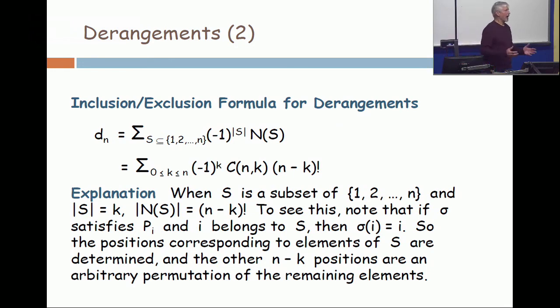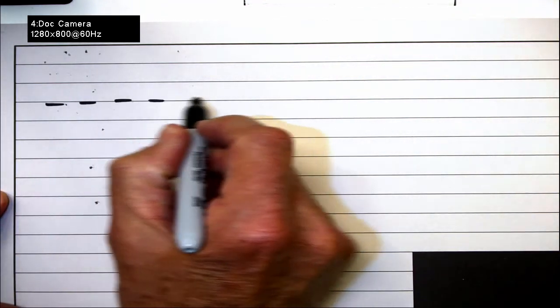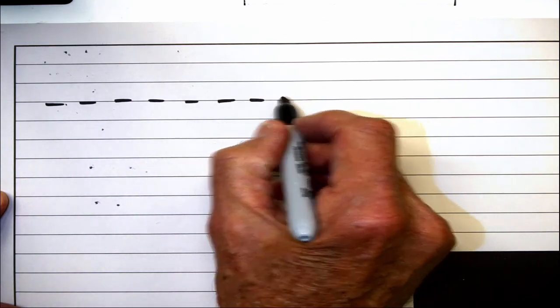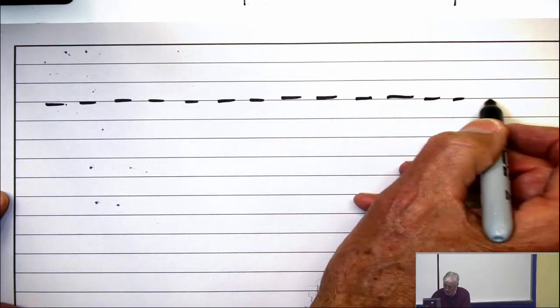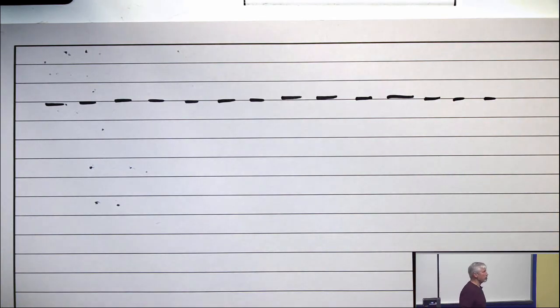Alright, look at a set of size k. So k elements of the set S are specified. Now, when you have a permutation which satisfies those properties, then what that means is that those positions are fixed. So what does that mean? A permutation can be viewed as a string. So here are n positions. And I'm going to write the integers from 1 to n in those blanks. I can do it any way I want.